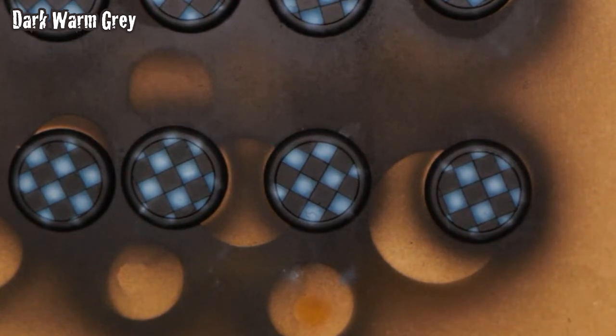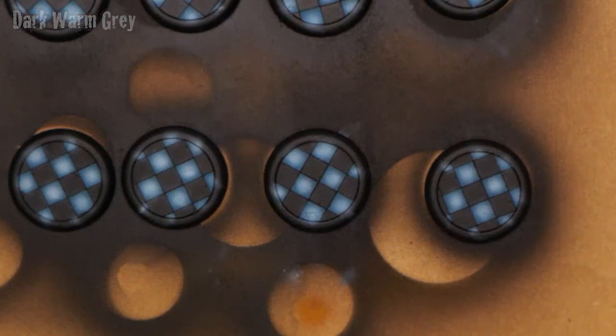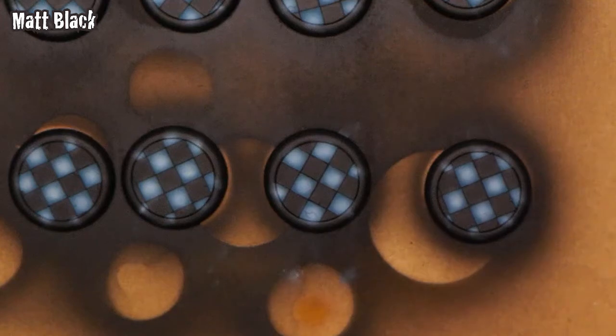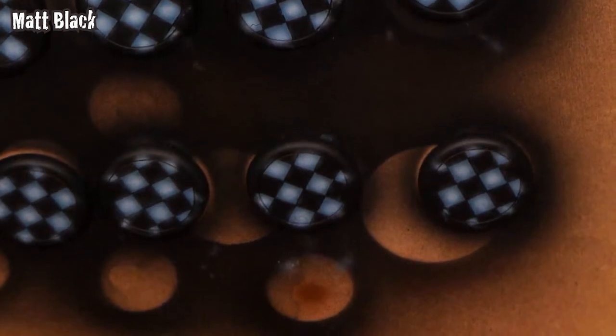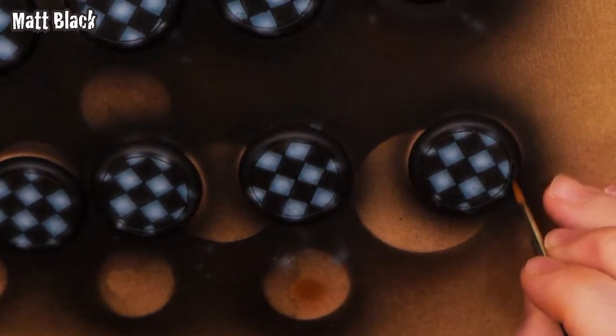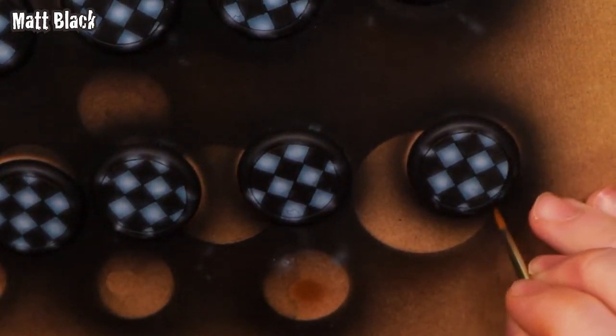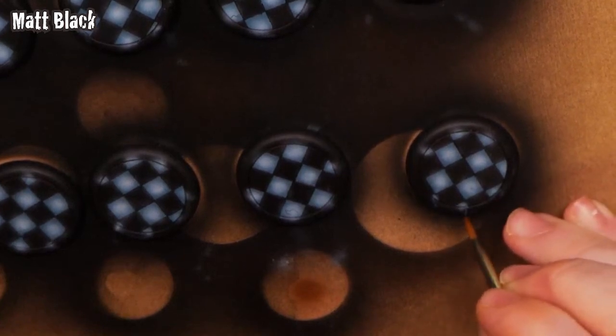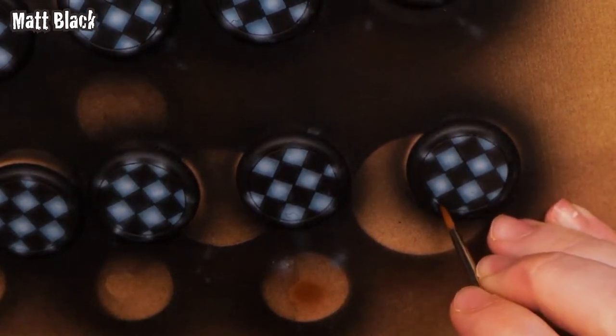We'll get out some of our Army Painter Matte Black, and this is where we go in and darken in the edges of the bases as well as the individual tiles. Wherever we may have some overspray, just go ahead and hit it with some of that matte black. Make sure it's nice and blocked in. If you have something else that you like using for black, like Vallejo Model Color, whatever works. We just want a nice flat tone here.